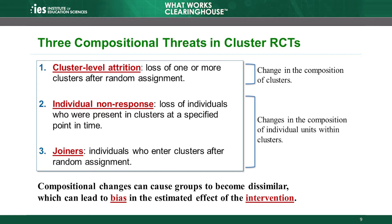When any of these three threats to composition occur, the groups can become dissimilar, which can lead to bias in the estimated effect, or impact, of the intervention. Bias is a systematic difference between the true impact of the intervention and the estimated impact, which can lead to incorrect conclusions about the effect of the intervention.